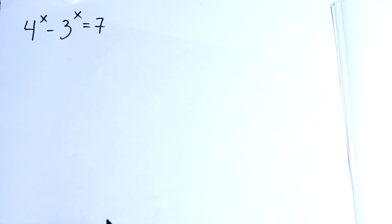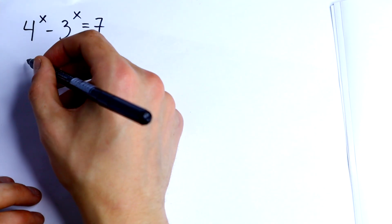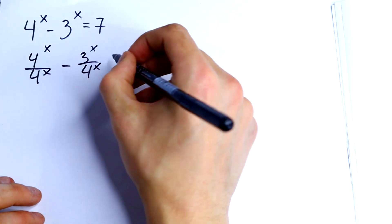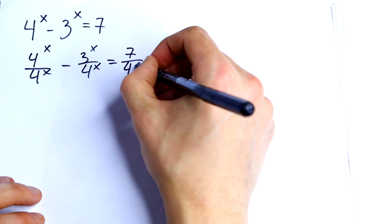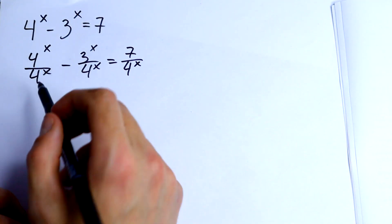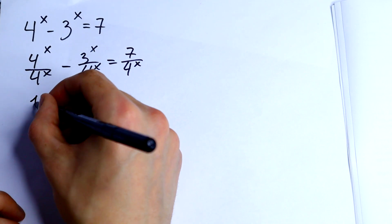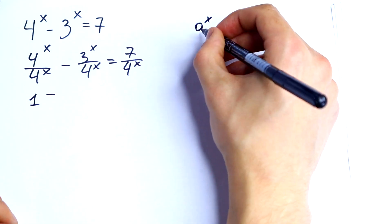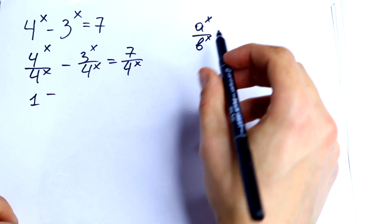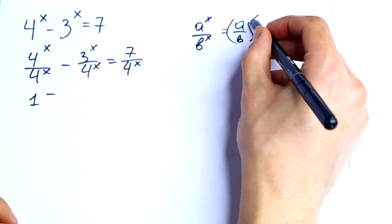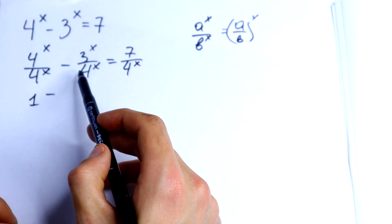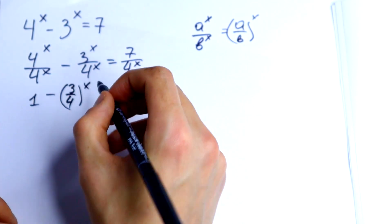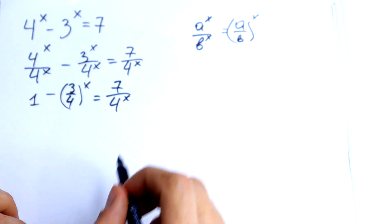For example, I divide both sides by 4 to the power x. So we get 4^x over 4^x minus 3^x over 4^x, equal to 7 over 4^x. This gives 1 minus — using the rule that a^x over b^x equals (a/b)^x — so this becomes 1 minus (3/4)^x, equal to 7 over 4^x.